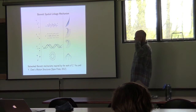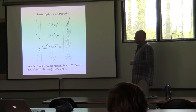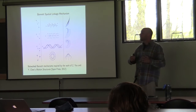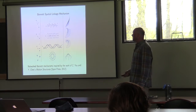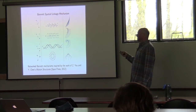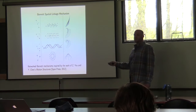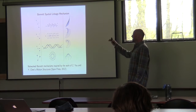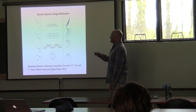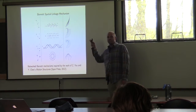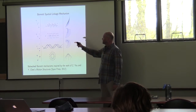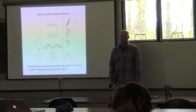Another type of form I've been trying to make are complex spatial linkage mechanisms that open and close with one degree of freedom. These are networked Bennett mechanisms inspired by work of Yu and Chen. Again, I'm using a construction approach to generating the constraints to solve these problems and see what kinds of shapes can come out.